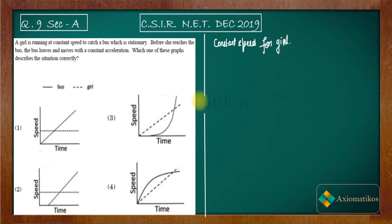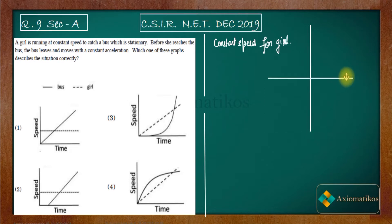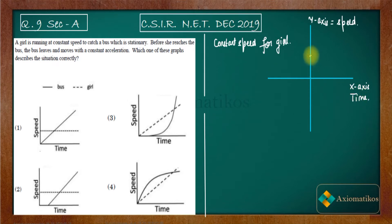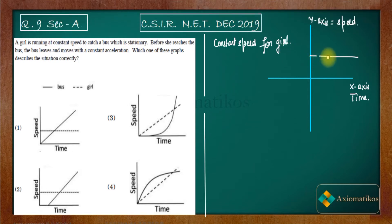For constant speed, consider a speed-time graph with the y-axis representing speed and the x-axis representing time. Since the girl moves at constant speed and time is always positive, her graph will be a horizontal straight line starting from t = 0, shown as a dotted line.